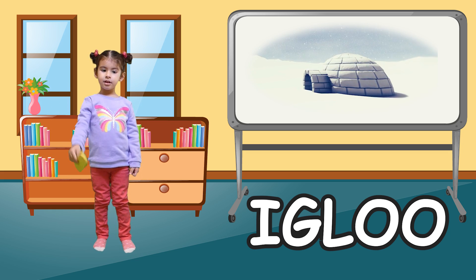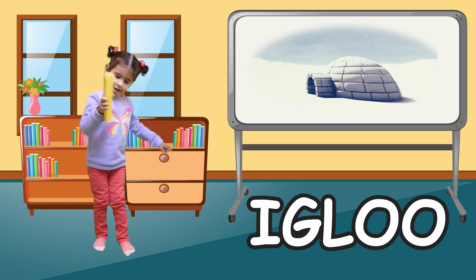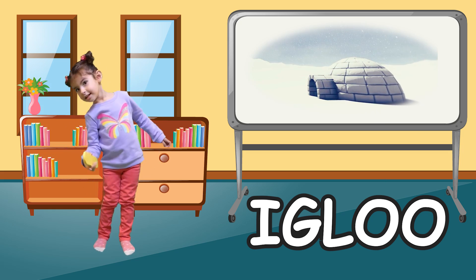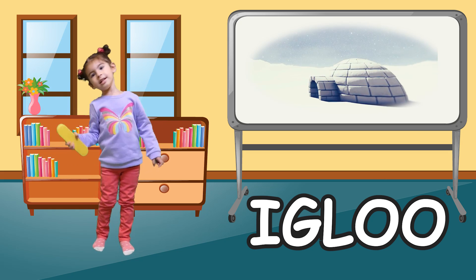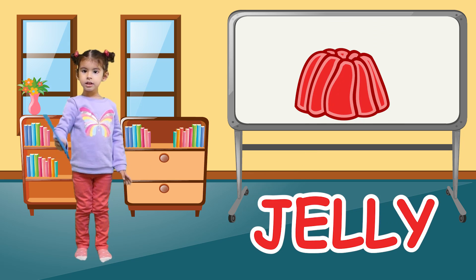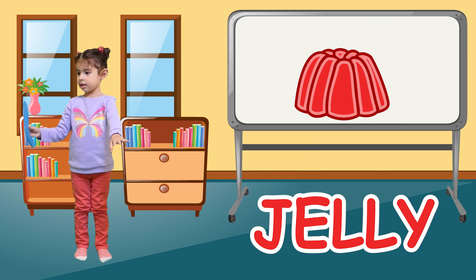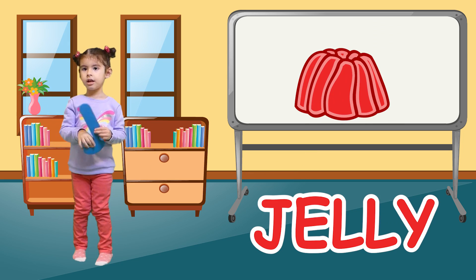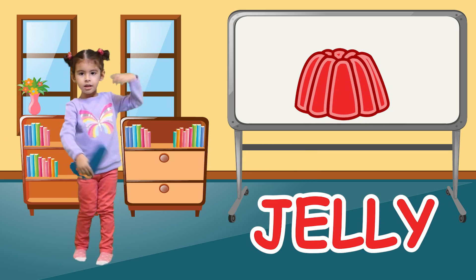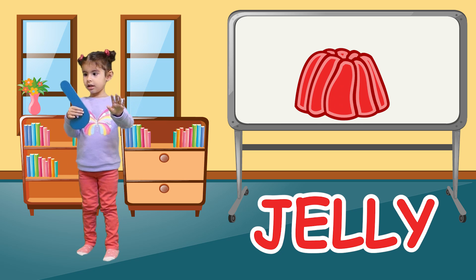I is for igloo. I, igloo, I, igloo, I, igloo. J is for jelly. J, jelly, J, jelly, J, jelly.